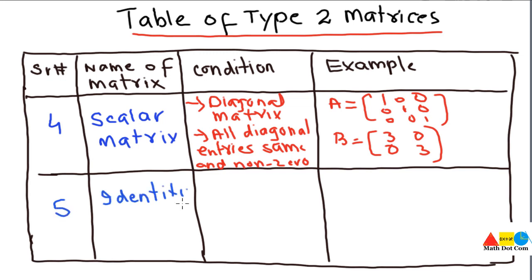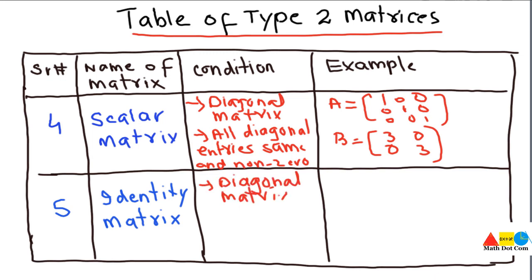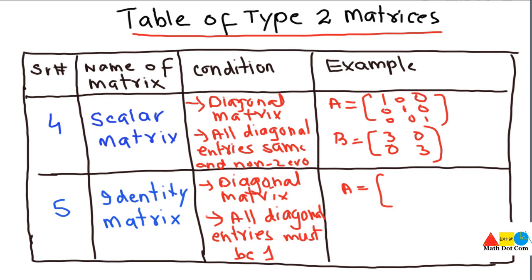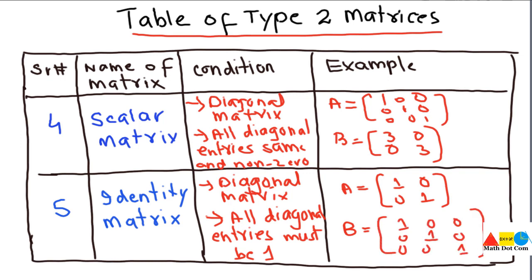The last type is the identity matrix, which is very important and appears in most matrix operations. Two conditions are required: first, it must be a diagonal matrix; second, all diagonal entries must be equal to 1. For example, a 2×2 identity matrix has 1s on the diagonal and 0s elsewhere. A 3×3 identity matrix follows the same pattern.